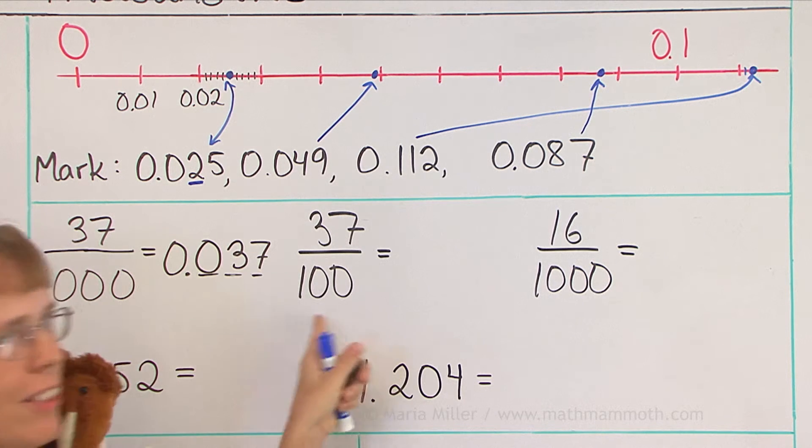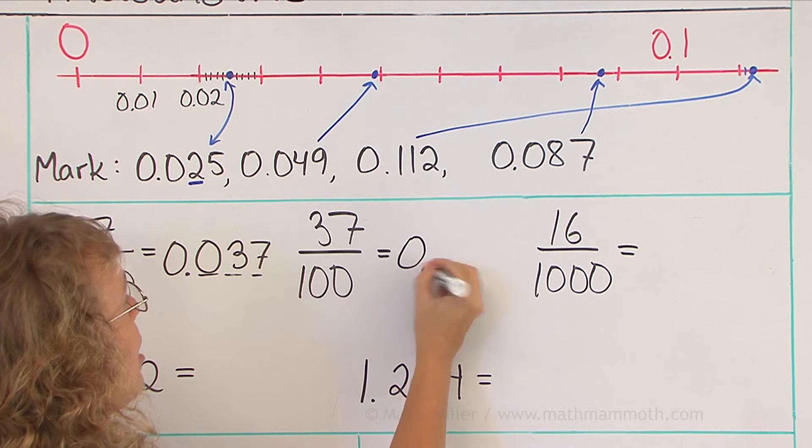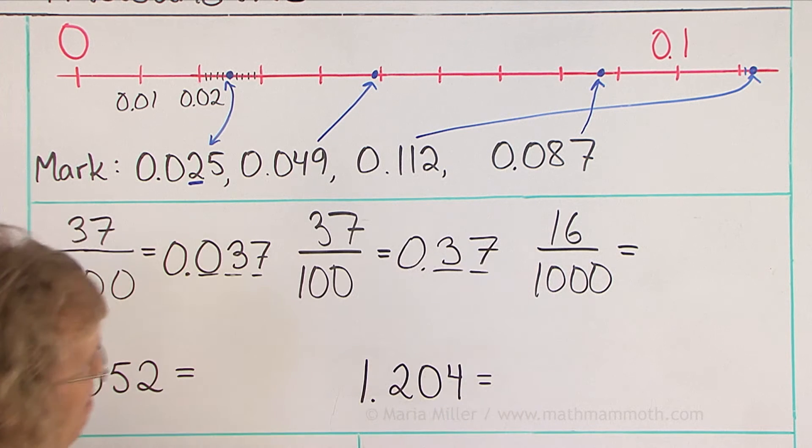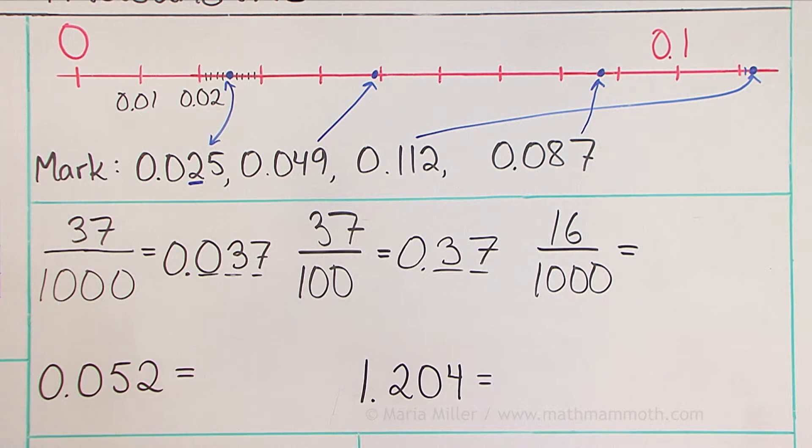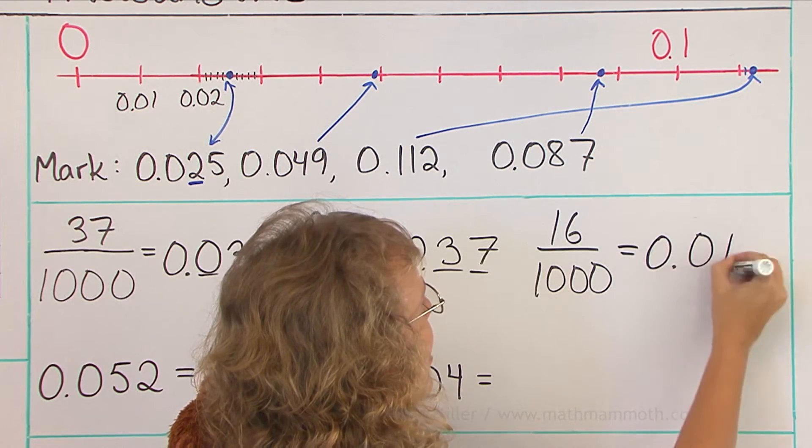How about 37 hundredths? This time you will need two decimal digits, so the 37 goes like that. And the last one is easy, right? Sixteen thousandths, 0.016.